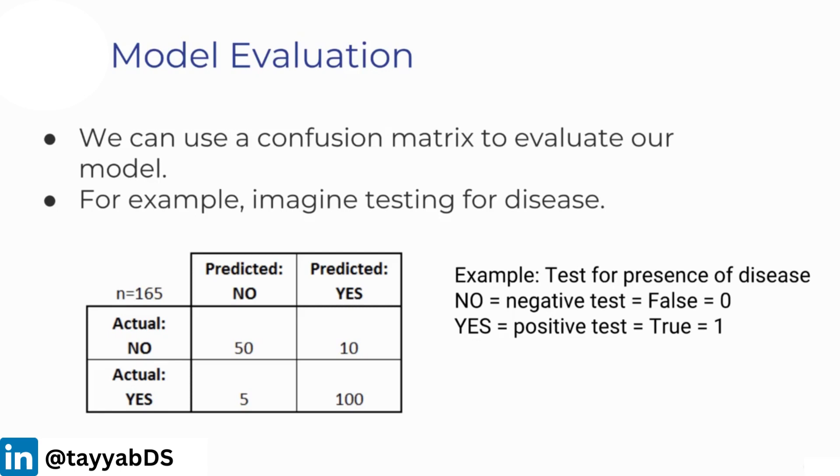In this case, for the example test for presence of disease, we'll say NO is equal to a negative test or false, often you just say that's zero. Or YES is a positive test, which is true, and again you say that's one. In this particular example, the total number of patients we have for this new diagnostic test is 165. So we say n equals 165. And then we have the results as follows.